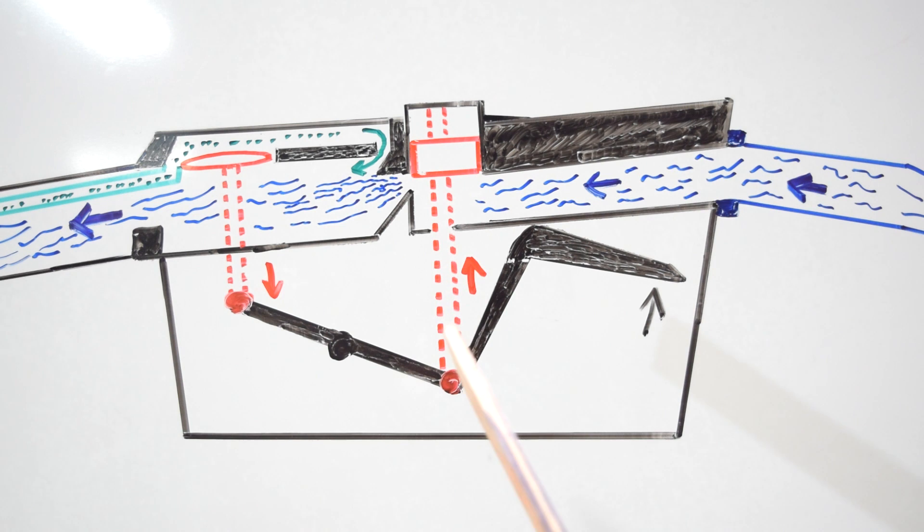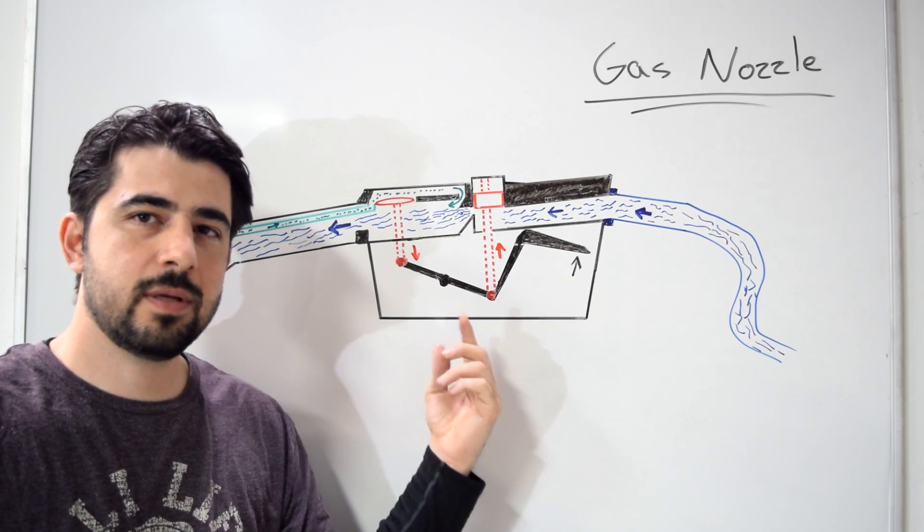Again, just to show it to you on the whiteboard: this valve goes up with the handle, and since they're connected, it pulls down on the second valve. Once you get fuel to flow through the nozzle, here comes the magic.